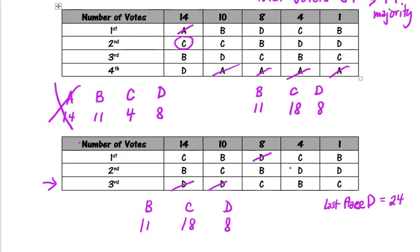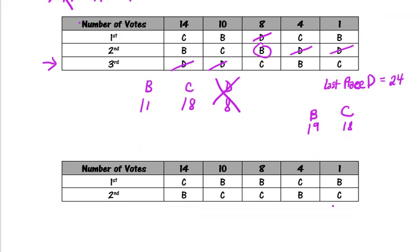So we're going to get rid of D but since we're getting rid of D, D here was the first place. Since we no longer have the option of voting for D, all of our votes that would have gone to D as first place will now go to B. So we're looking at B and C, C stays the same but now B will be 11 plus the 8 that came from D, which gives us 19.